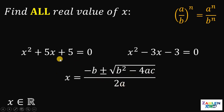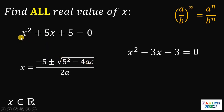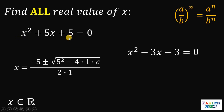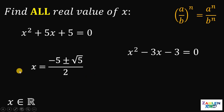Applying the quadratic formula to x²+5x+5 = 0, where b=5, a=1, and c=5: we get x = (−5 ± √(5²−4·1·5)) / (2·1). Simplifying inside the square root: 25 − 20 = 5, and 2 times 1 is 2. Therefore, we have two real values: x = (−5 ± √5) / 2.